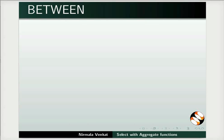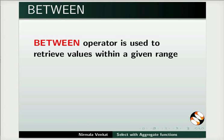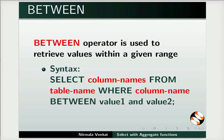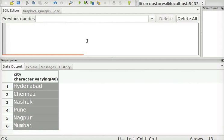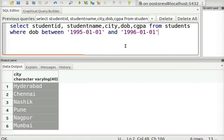Next, we will learn about the between operator. The between operator is used to retrieve values within a given range. The syntax is: SELECT column_names FROM table_names WHERE column_name BETWEEN value1 AND value2. Let us see an example — I want to retrieve details of students who are born between January 1995 and January 1996. Let us see the output.